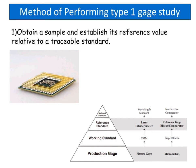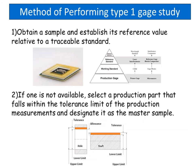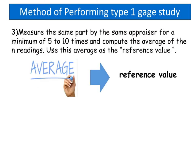Method of performing a type 1 gauge study: Obtain a sample and establish its reference value relative to a traceable standard. If one is not available, select a production part that falls within the tolerance limit of the production measurements and designate it as the master sample. Measure the same part by the same appraiser a minimum of 5 to 10 times and compute the average of the n readings. Use this average as the reference value.